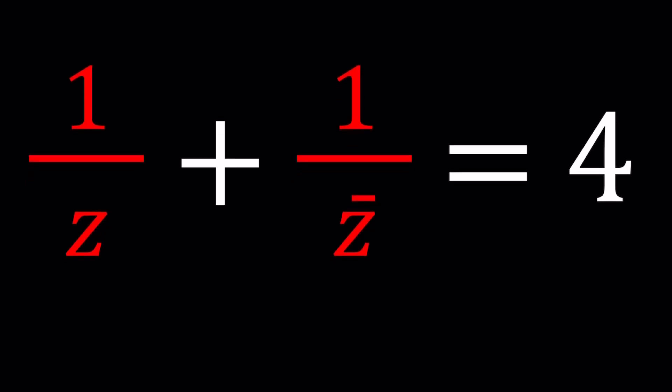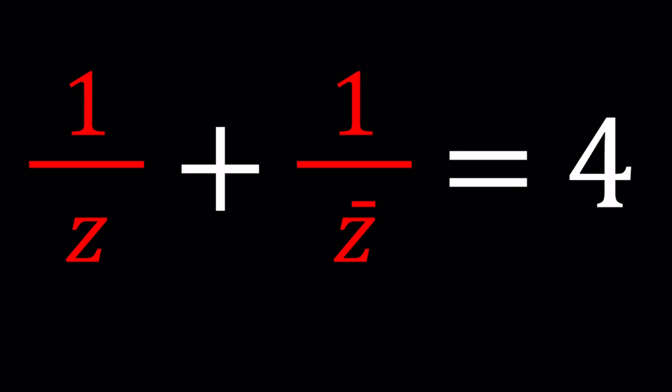So pretty complex, right? So we have 1 over z plus 1 over z bar equals 4 and z bar is the complex conjugate. So how do you define the complex conjugate?